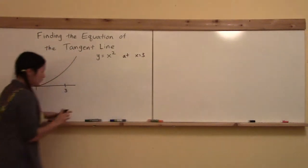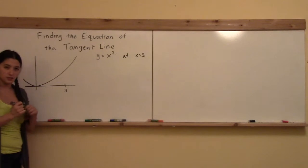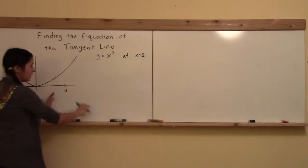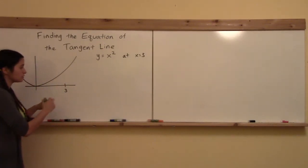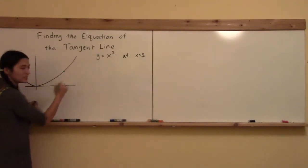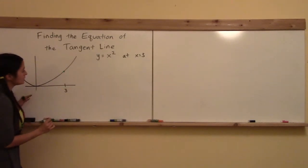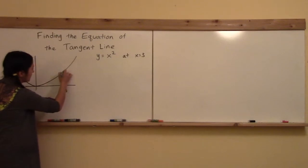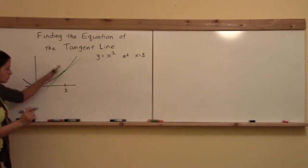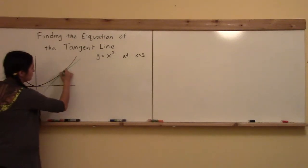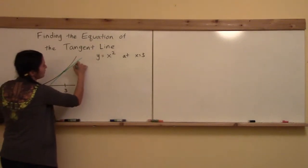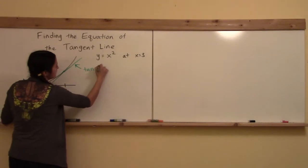Okay, so what does that mean? Visually, what that means is I have a graph of the function, I have a point of interest, x is equal to 3, and then remember what a tangent line is. A tangent line is the line that's just going to touch right at that one point, and it's not really touching any other points on the graph.